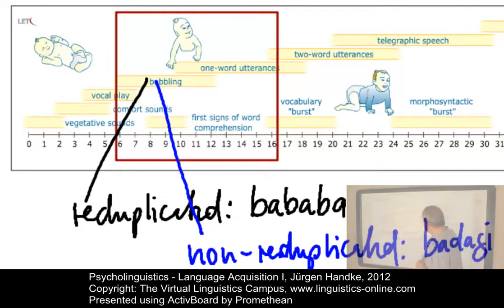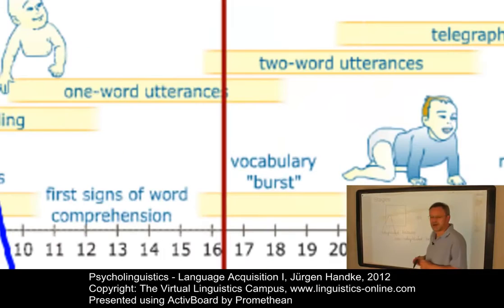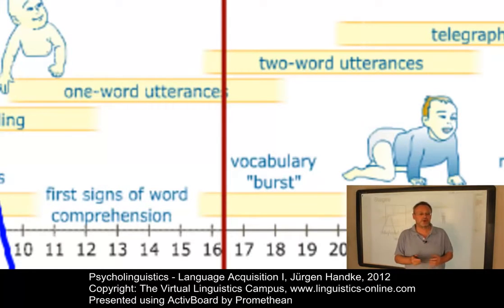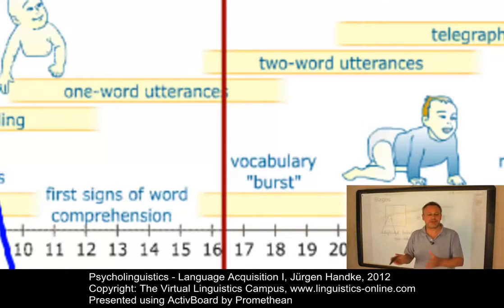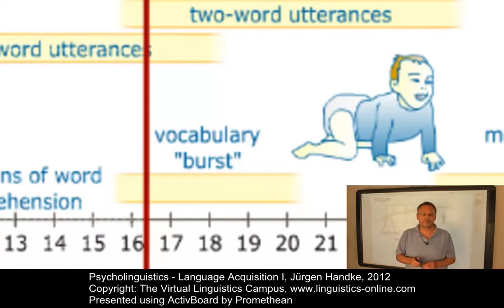First signs of comprehension accompany this stage, so children now acquire the association between situations and strings of sound. Then we can observe a one-word utterance phase, where children first use names for objects, then name actions or motions, and later use words to pick out thematic roles played by objects such as agent, action and object. Following this, we find an enormous vocabulary burst — an acceleration in the rate of vocabulary growth.